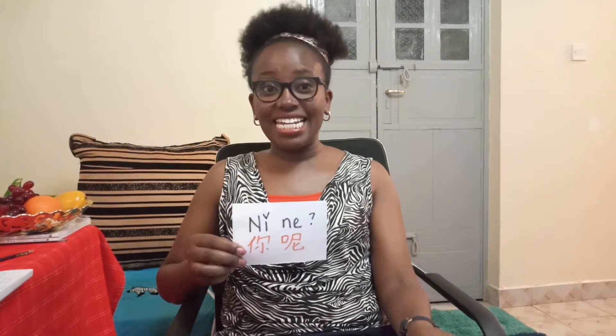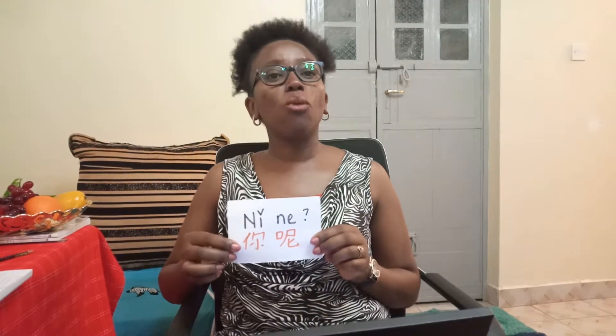Then we have 'na' which means 'which.' Then we have 'ren' which means 'a person.' And then we have 'na guo ren' — 'na' means 'which,' 'ren' means 'person,' 'guo' is 'country' — so it basically means 'which country person,' in other words, nationality.